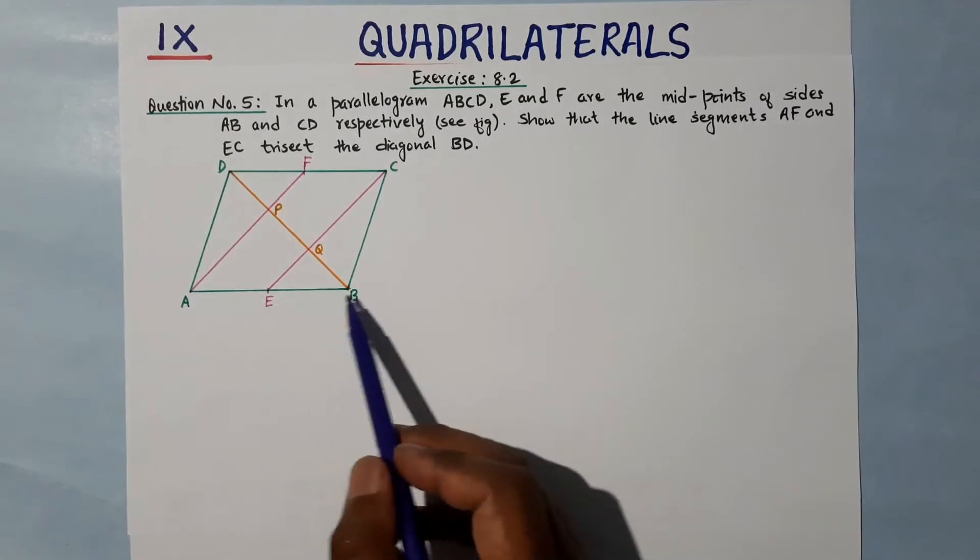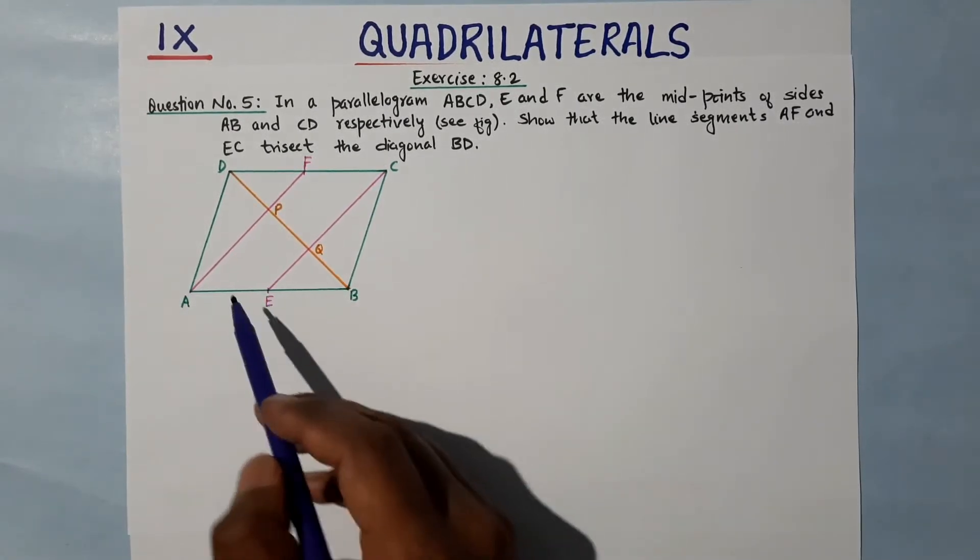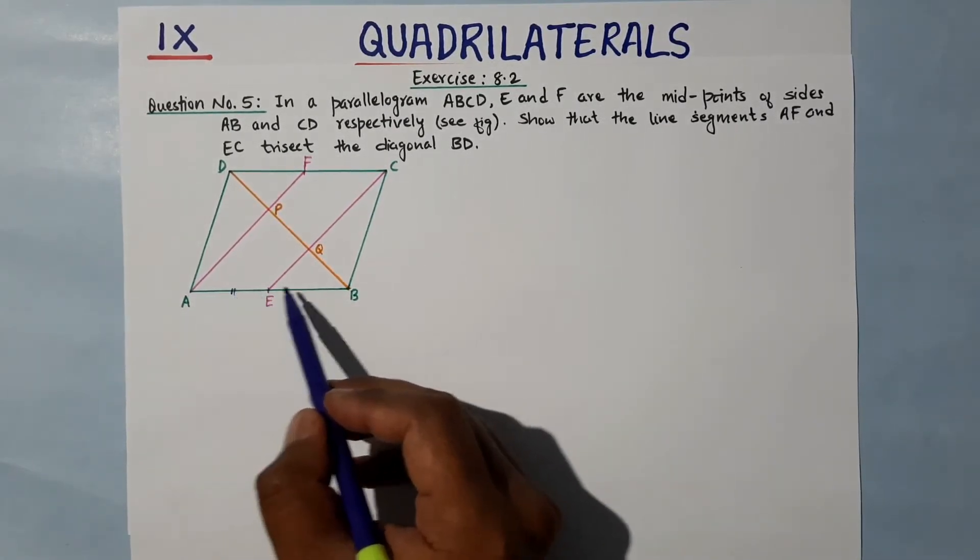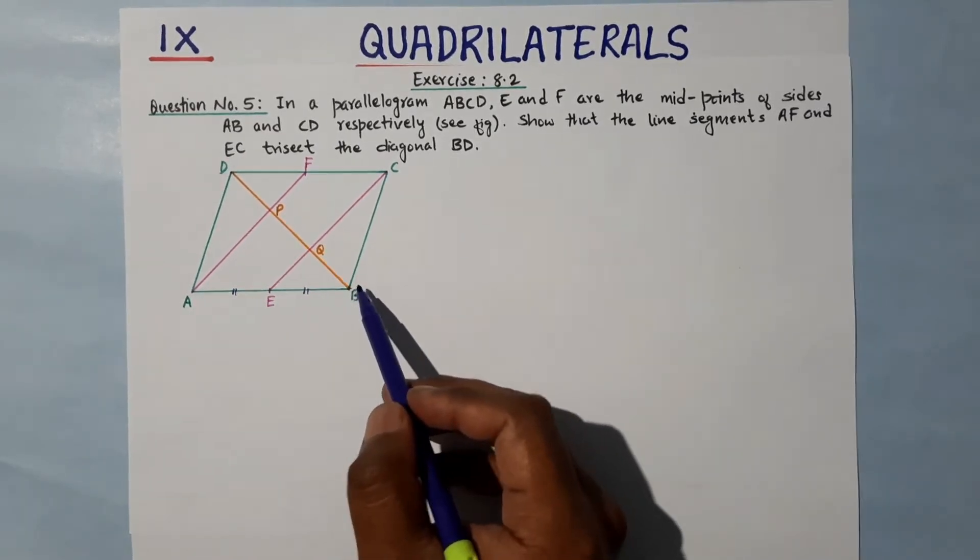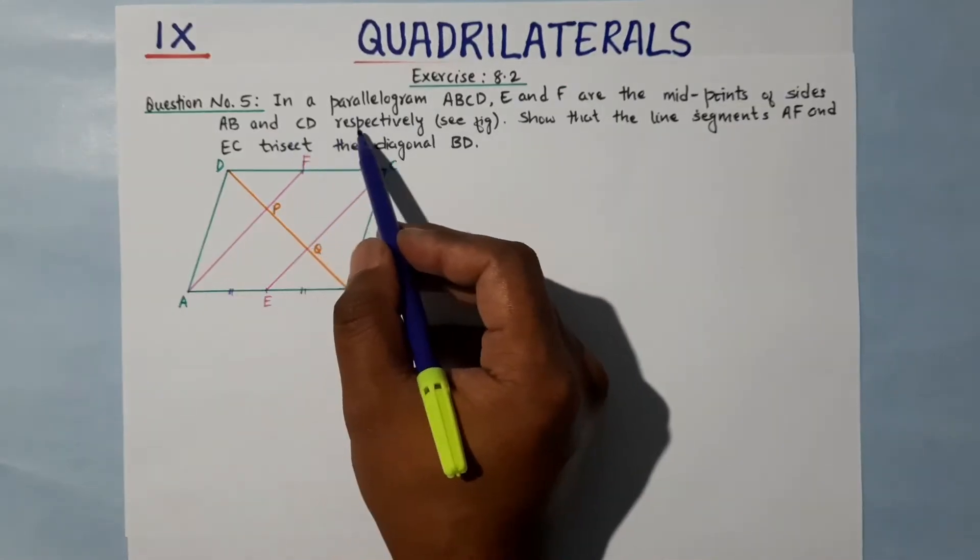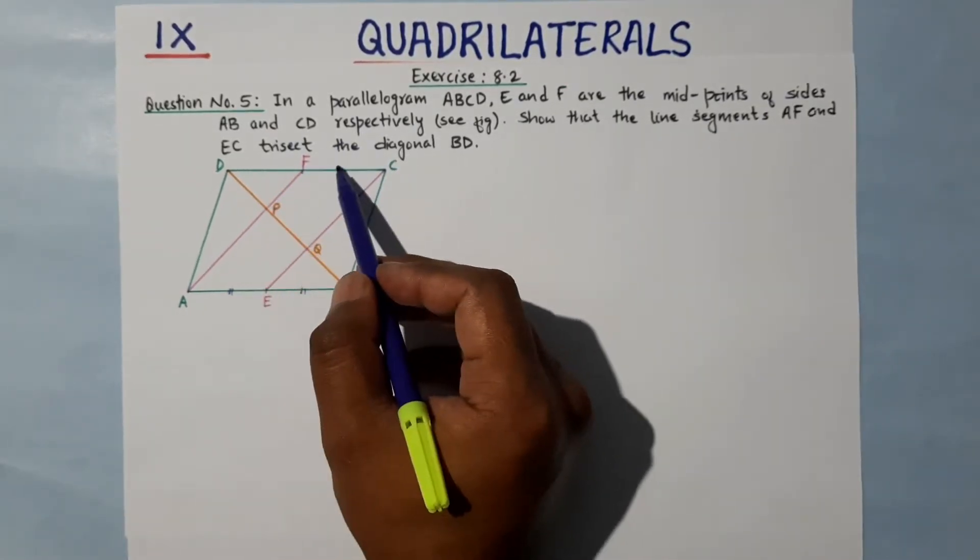...AB and CD. AB's midpoint is E. That means this and this are equal value - that means AE is equal to half of AB. And similarly, F is the midpoint of CD, that means these are equal.